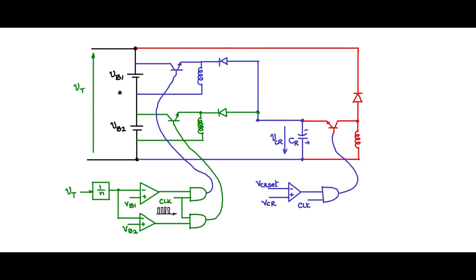In this way this charge pump based equalization circuit operates. You can connect any number of batteries in series with the same circuit getting duplicated. This is a very efficient way of doing charge balancing, especially for very high power levels.